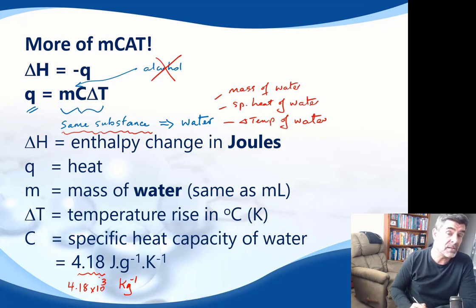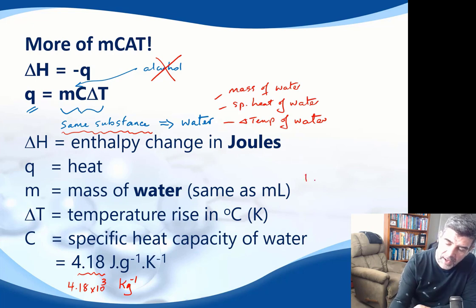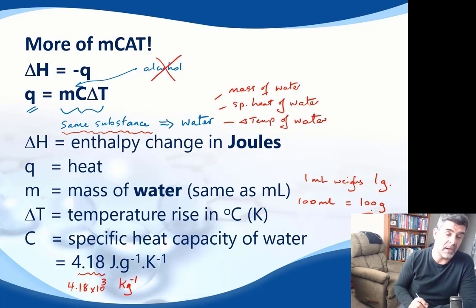I think most of the time the quantities of water that you're going to be using to heat are going to be in mils, and therefore they're easiest transferred into grams because we know that for water, 1 mil of water weighs 1 gram, and therefore 100 mils will be equivalent to 100 grams, and that's the value that we can put into our equation.